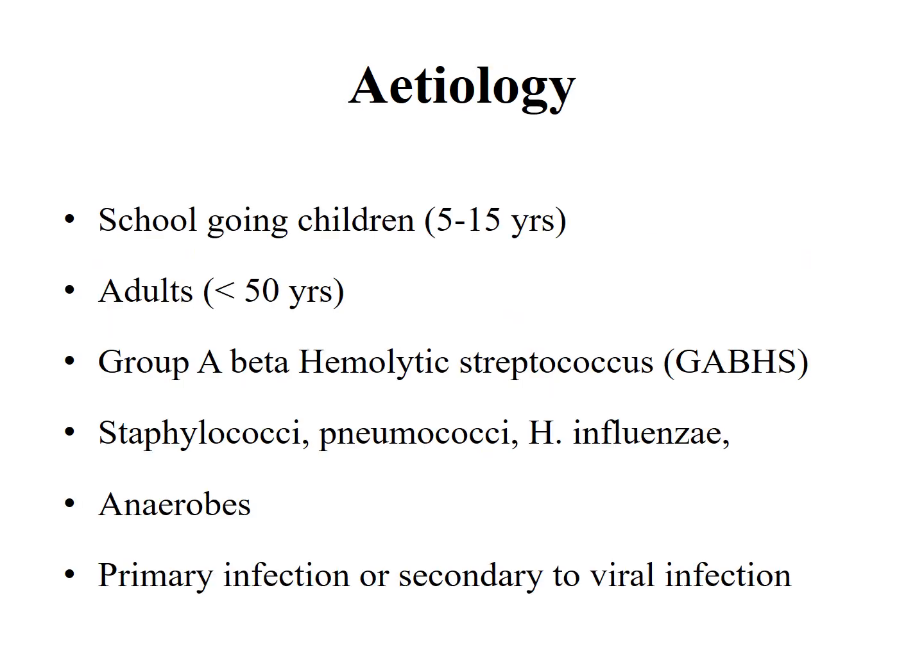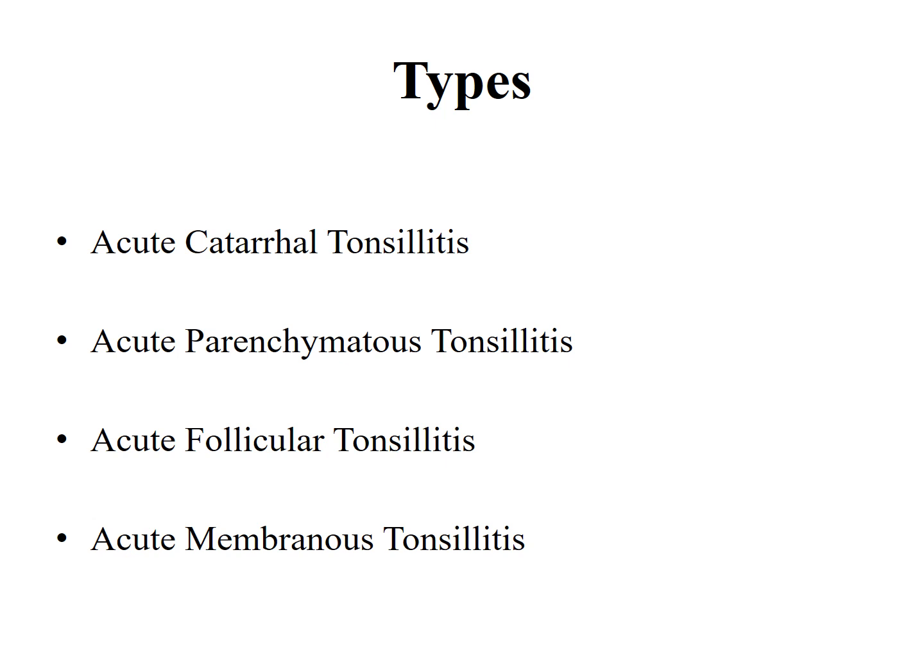Regarding etiology, it mainly affects school-going children between ages 5 to 15 years and rarely affects adults more than 50 years. The most common causative organism is Group A beta-hemolytic Streptococcus. Other organisms include Staphylococcus, Pneumococcus, Haemophilus influenzae, and anaerobes. It can be a primary bacterial infection or secondary to a viral infection.